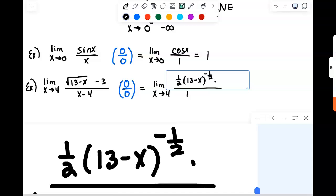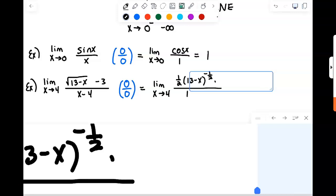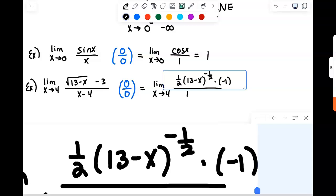Times the derivative of 13 minus X, which would be a negative 1. So we're going to have 1 half times 13 minus X to the negative 1 half, and then times minus 1.